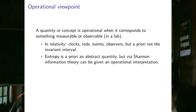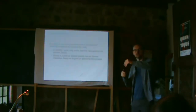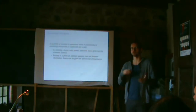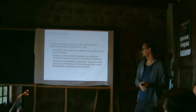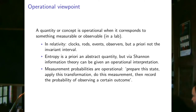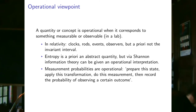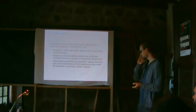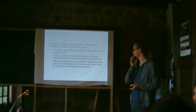Being operational is not always obvious — sometimes you need to work to show something is operational. What's important for reconstruction of quantum theory is that measurement probabilities are operational: if I prepare a state, apply a transformation, perform a particular measurement many times, and record the frequency of a particular outcome, that probability is an operational quantity.